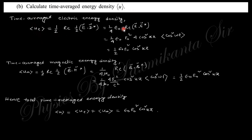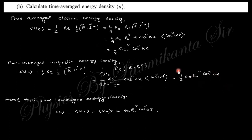Next, calculate the time-average energy density. The electric energy density is (1/2) Re(E · D), where D = ε₀E in free space, giving (ε₀/2)|E|². The time-average magnetic energy density is similarly obtained as (1/2μ₀)|B|².